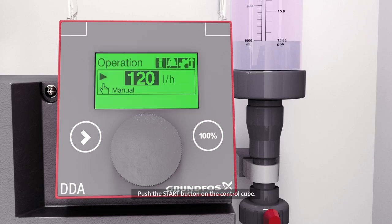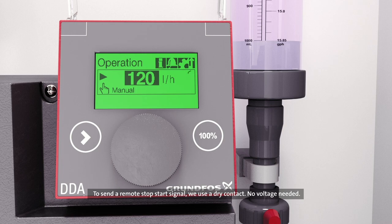Push the start button on the control cube. To send a remote stop start signal, we use a dry contact, no voltage needed.